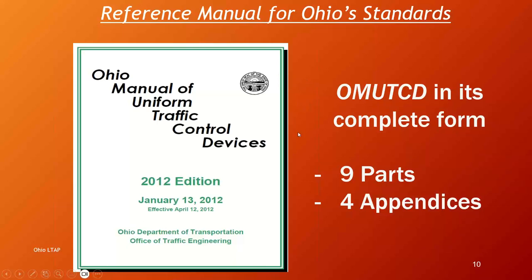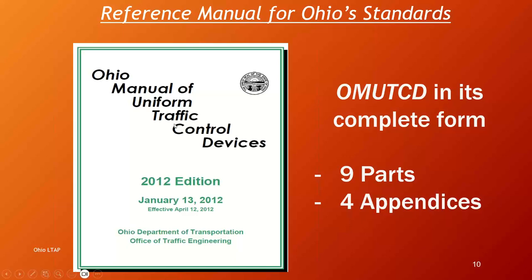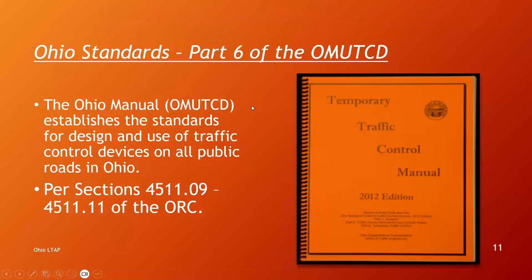There are nine parts to this manual — it's all about traffic control of all kinds. You've got a part on permanent roadway signs like stop signs and curve ahead signs, another part for pavement markings, another for traffic signals, parts for specialized locations like school zones and railroad crossings, a bikeway and bicycle/pedestrian facilities part, a low-volume roads part, and then the one we're interested in today is Part 6 — the Temporary Traffic Control Manual.